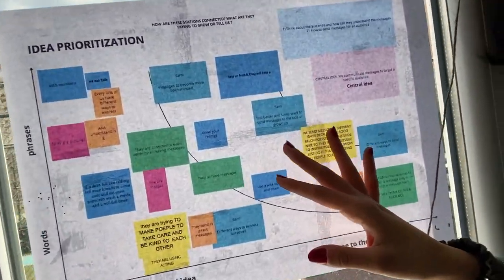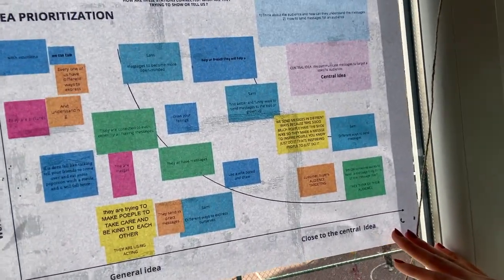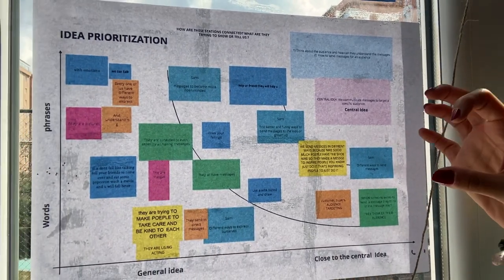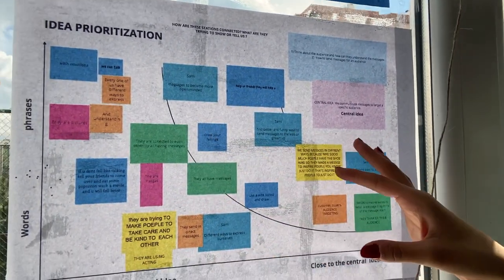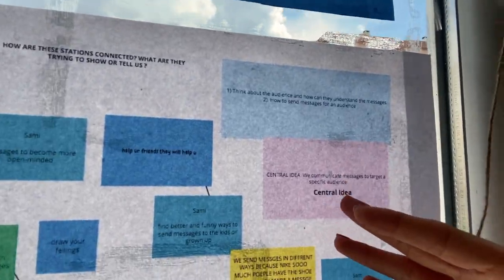At another station they observed messages created by different brands and answered a couple of questions. Afterwards, we gathered all the stations together and tried to come up with a central idea and make connections between them. They did a fantastic job — we used Concept Board and I printed it out. We played a small game where they answered questions that helped unpack the central idea, categorizing answers from general ideas to closer to the central idea.